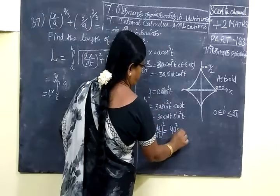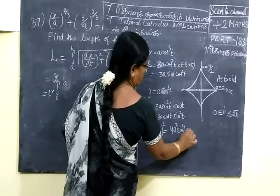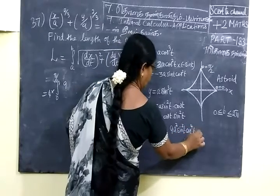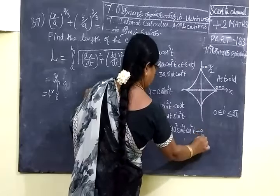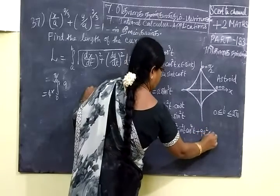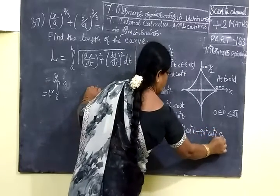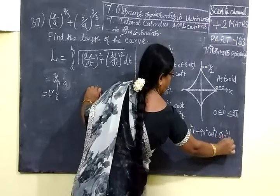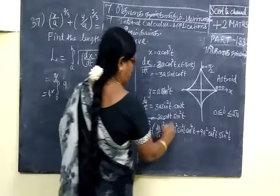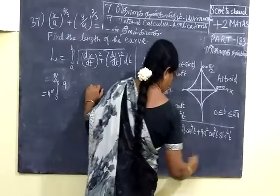So dx/dt whole square plus dy/dt whole square, the whole square is 9a² sin² t cos⁴ t plus 9a² cos² t sin⁴ t.